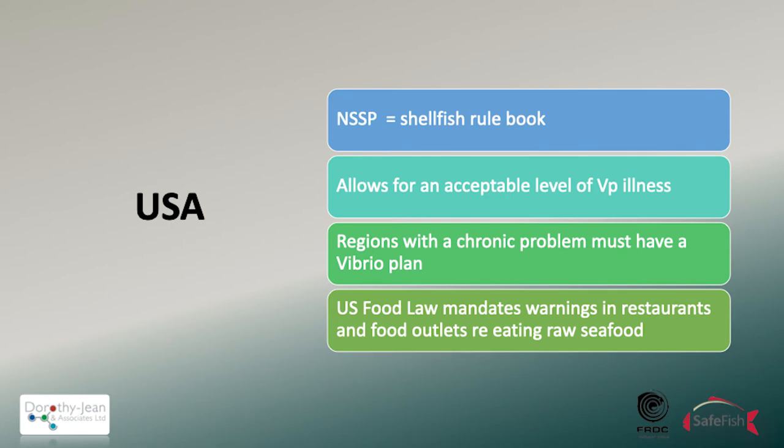Owen last week talked about the fact that when they suddenly had VP illnesses in Tasmania, they looked to the United States to help work out what to do in a VP plan. The United States also requires in their food code that warnings be placed in restaurants and on menus to remind people that raw protein, including raw shellfish, has the ability to make people ill, and that if they are immunocompromised or pregnant, they should definitely ponder their menu that night.